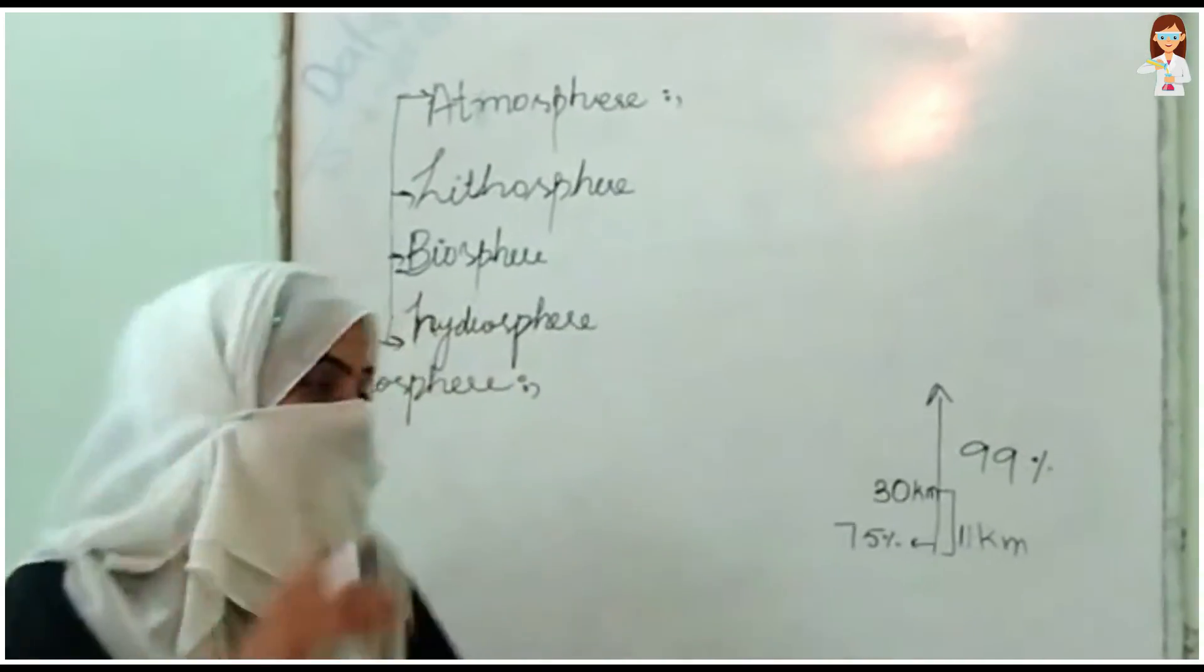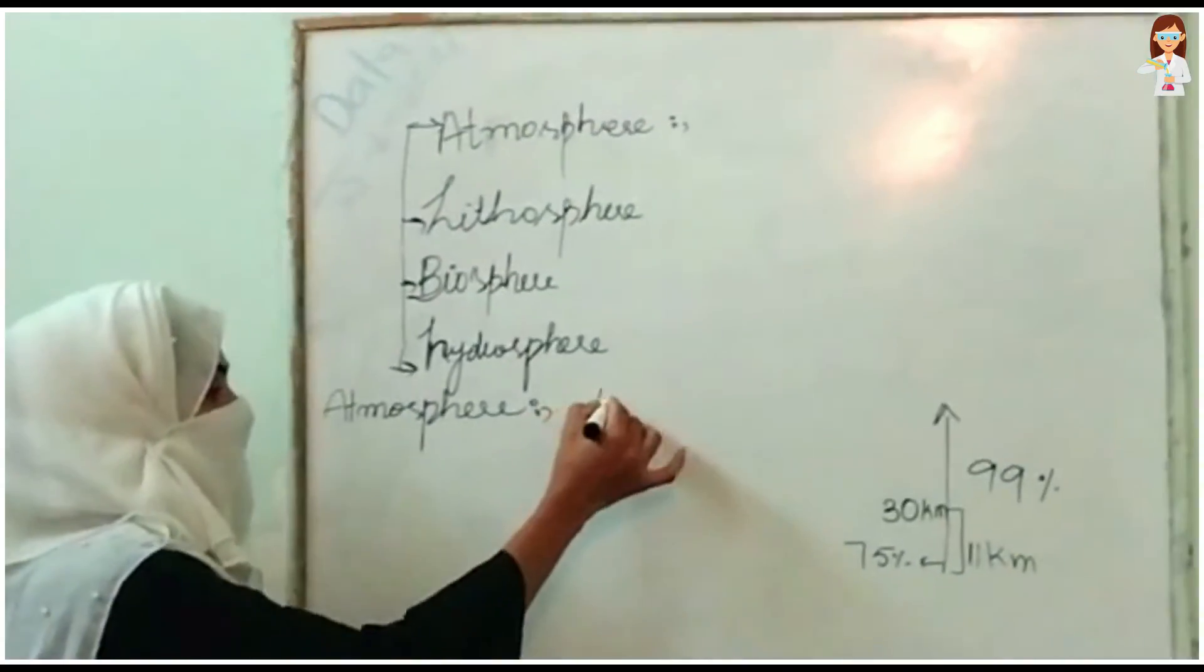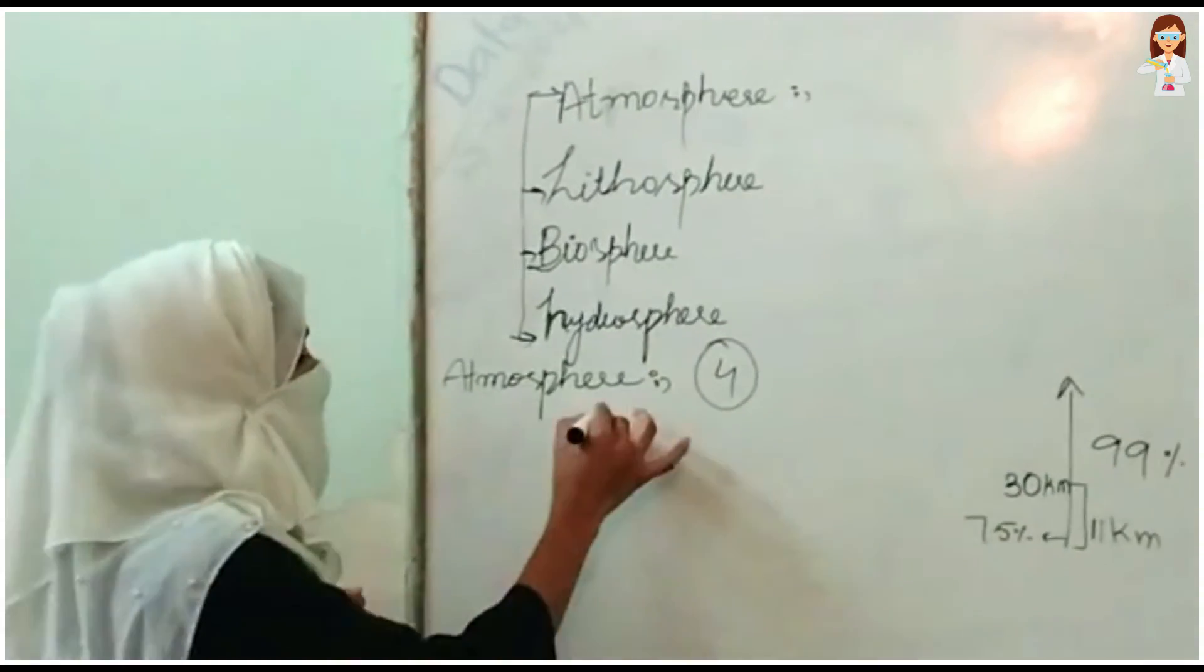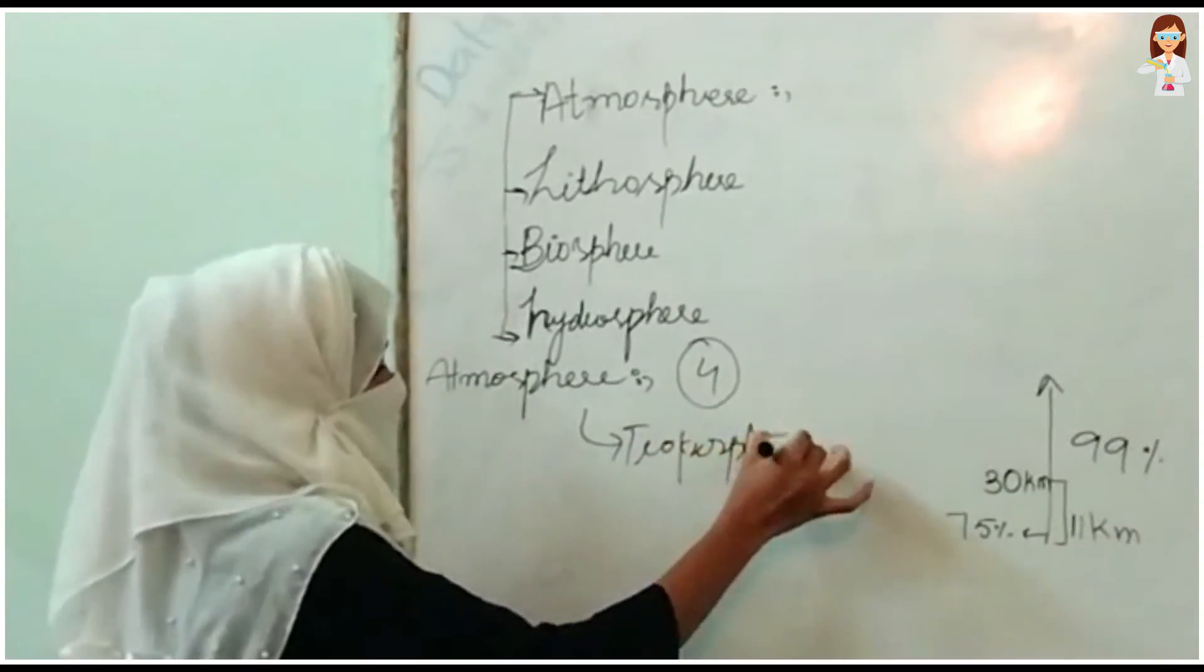The question is, how many atmosphere layers are there? How many atmosphere layers are there? Four. First, troposphere. Second, troposphere.